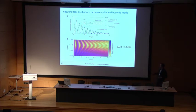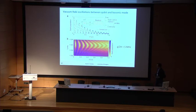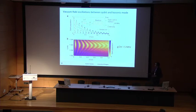If you change the qubit frequency as a function of flux and bring the qubit on resonance with the bosonic mode resonator, we observe these nice oscillations — the chevron pattern. Here's a line trace of one of them, showing these nice oscillations going up and down.